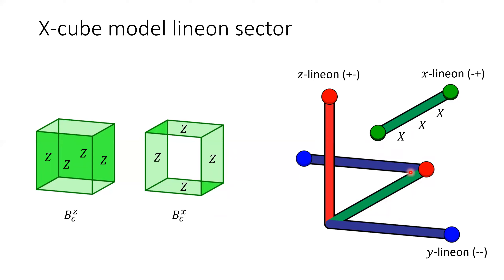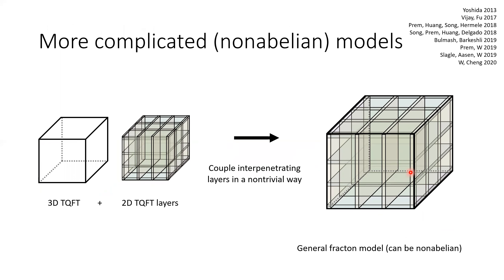The X-cube model led to a whole bunch of study and abstraction. We've come up with a whole bunch more models that are even more complicated. You can get sort of crazy things with these — we can introduce non-abelianness. You can think of many of these models as taking some 3D TQFT and some 2D TQFT layers and coupling them in a non-trivial way to get a new model that can be shown to be beyond 3D TQFT or 2D TQFT layers but still has topological order. So we have this whole world of models and we're trying to figure out what to do with them.